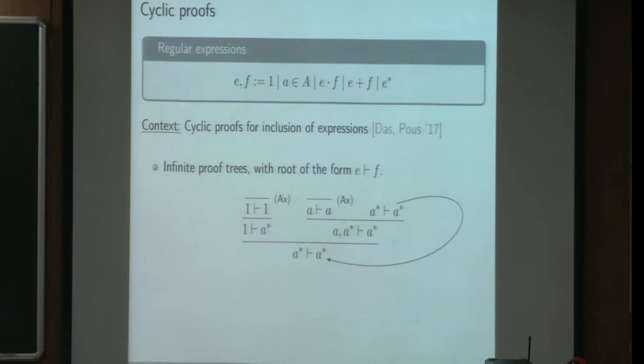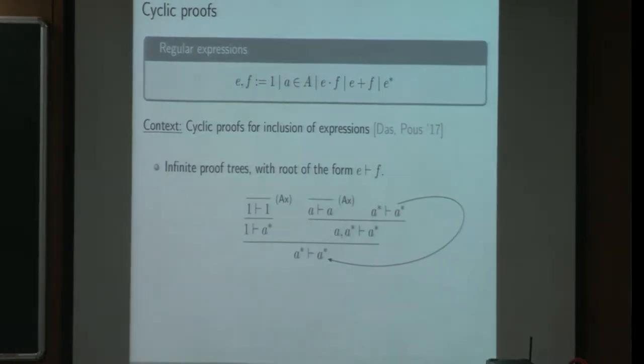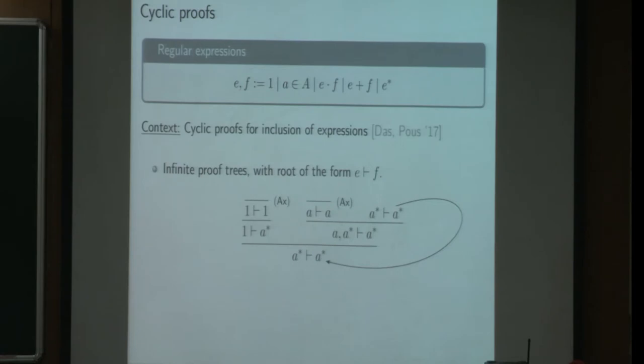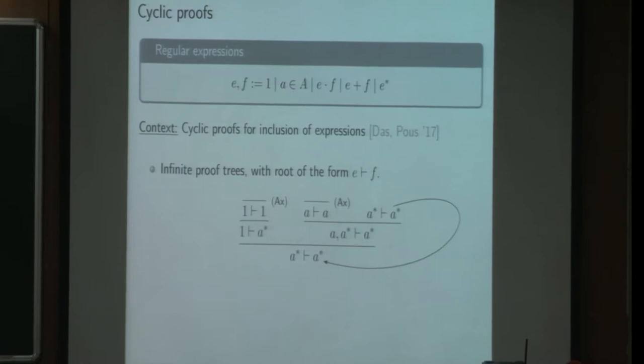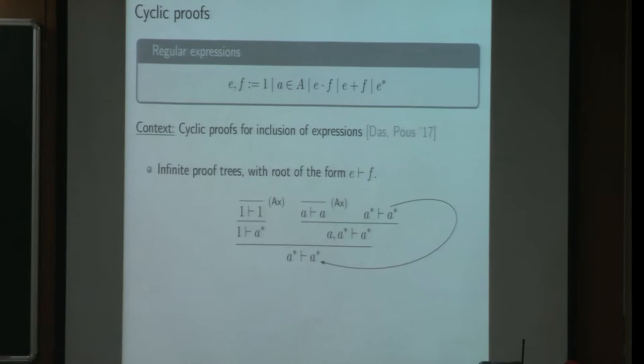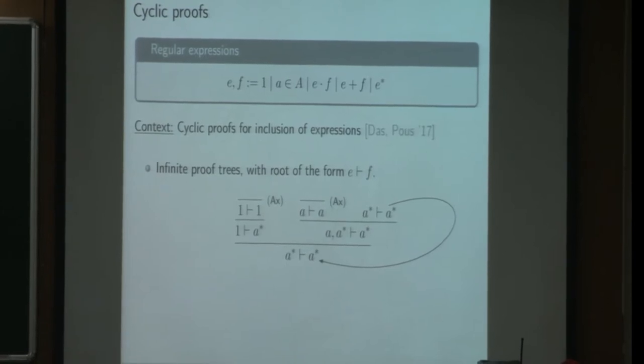In this work, we focused on some cyclic proof system. So the main difference with usual proof is that we allow the proof tree to be infinite. But as we want it to be represented as a finite structure, we require that there is only finitely many distinct subtrees. And so we can represent them as a proof graph rather than proof trees and the name of cyclic proofs, because it looks like a proof tree with some cycle in it.